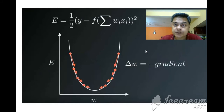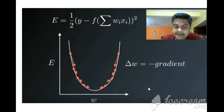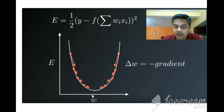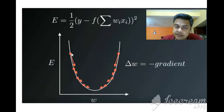Now the most important part: the gradient descent diagram. On the x-axis is the weight, and on the y-axis is the error e. When the weight is low, the error is high. For one optimum weight, the error is at its lowest. Then as the weight increases further, the error goes up again. We need to find that optimum weight.